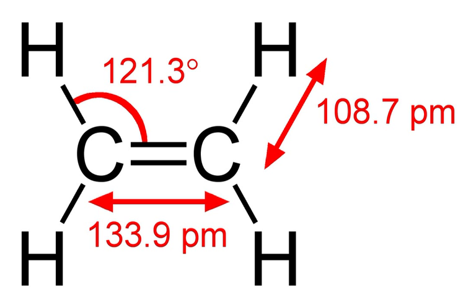Global ethylene production was 107 million tons in 2005, 109 million tons in 2006, 138 million tons in 2010, and 141 million tons in 2011. By 2013, ethylene was produced by at least 117 companies in 32 countries. To meet the ever-increasing demand for ethylene, sharp increases in production facilities are being added globally, particularly in the Middle East and in China.